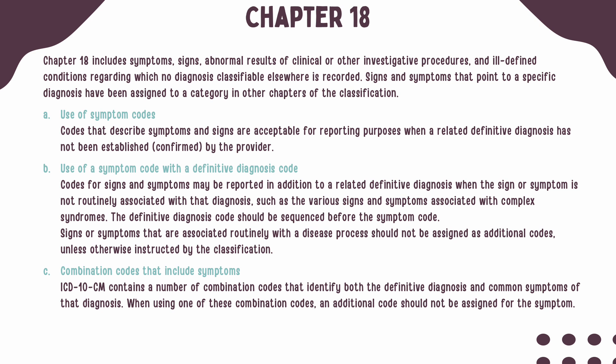An example would be signs or symptoms associated with complex syndromes. The only time a sign or symptom routinely associated with a disease process should be coded separately is when instructed by the guidelines or your tabular index. ICD-10-CM contains many combination codes that identify both the definitive diagnosis and a common sign or symptom. When one of these combination codes is used, an additional code for the symptom should not be assigned.